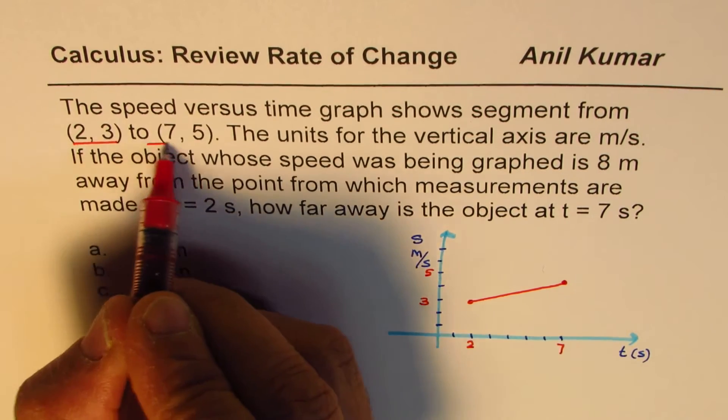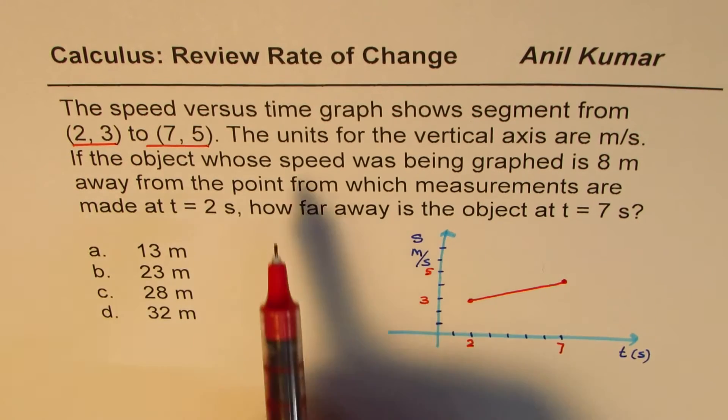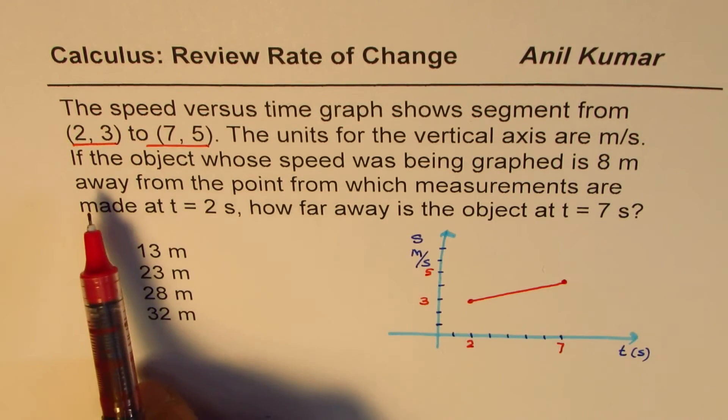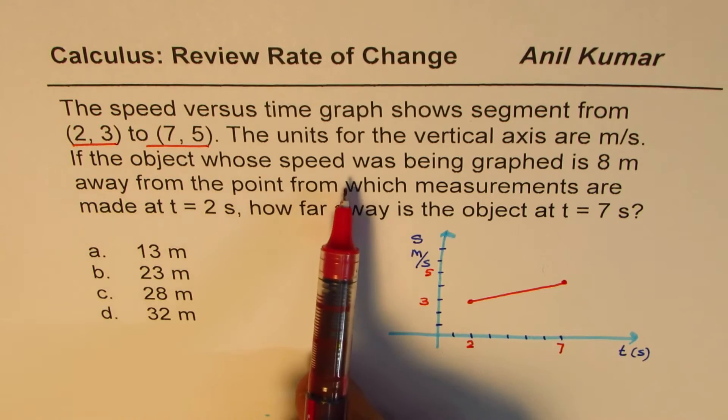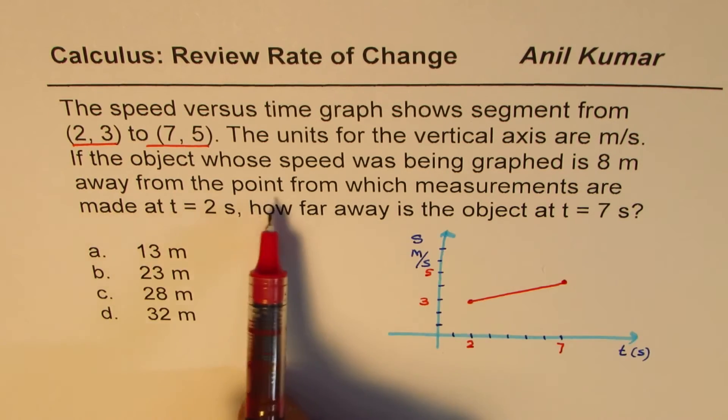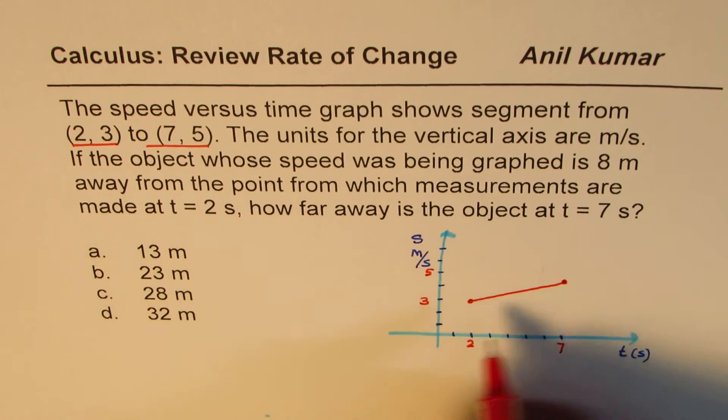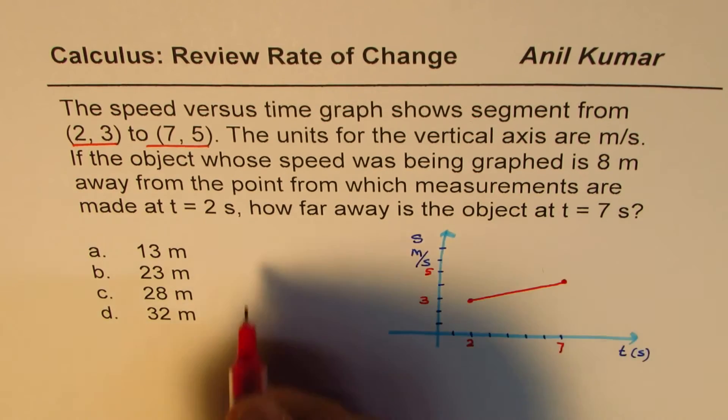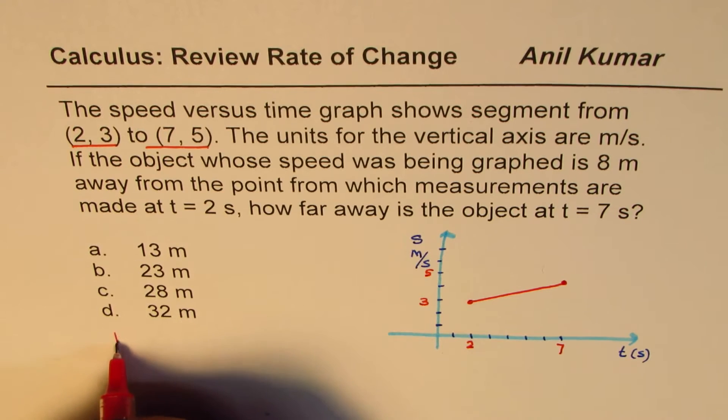This is from (2,3) to (7,5). The units for vertical axis are meters per second. If the object whose speed was being graphed is 8 meters away from the point, the initial distance is 8 meters.